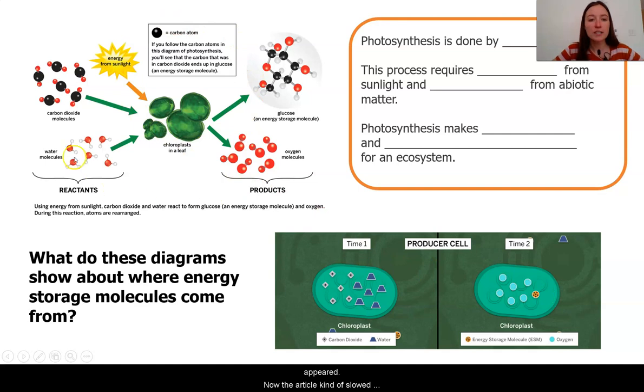Now, the article slowed that process down for us and led us to see what was really happening, that a chemical reaction was taking place. The carbon dioxide and the water are reactants coming in, and in this chloroplast, kind of this factory, sunlight is coming in, giving energy for this reaction to occur, where the atoms are rearranging the carbon into glucose and also other atoms into oxygen.